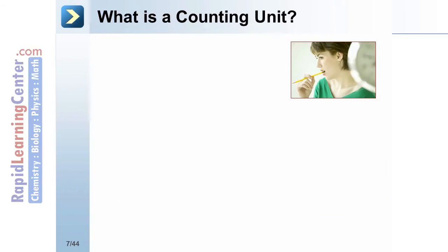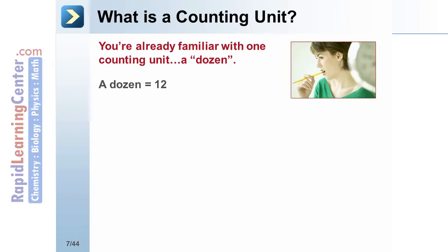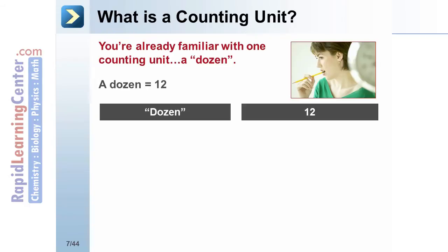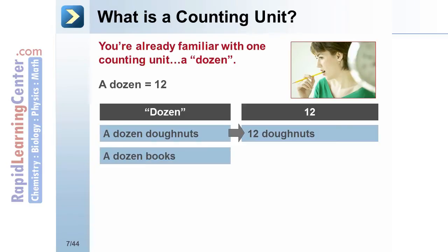What is a counting unit? You use a counting unit every time you buy donuts. A dozen is a counting unit. Instead of counting each individual donut, you refer to the group as multiples of 12. Dozen always refers to multiples of 12.